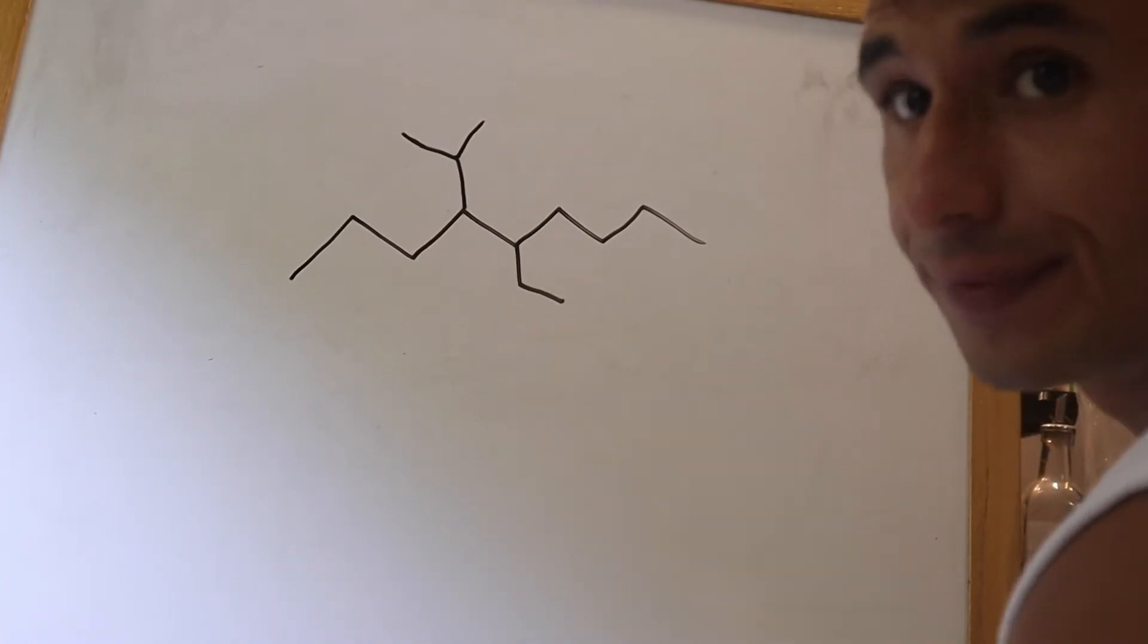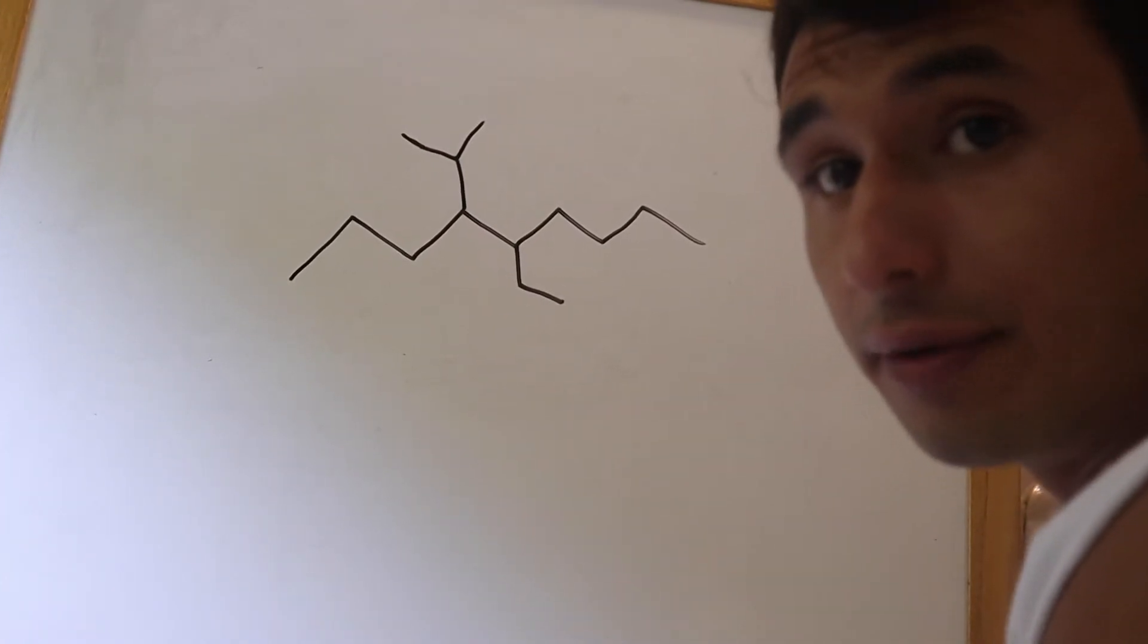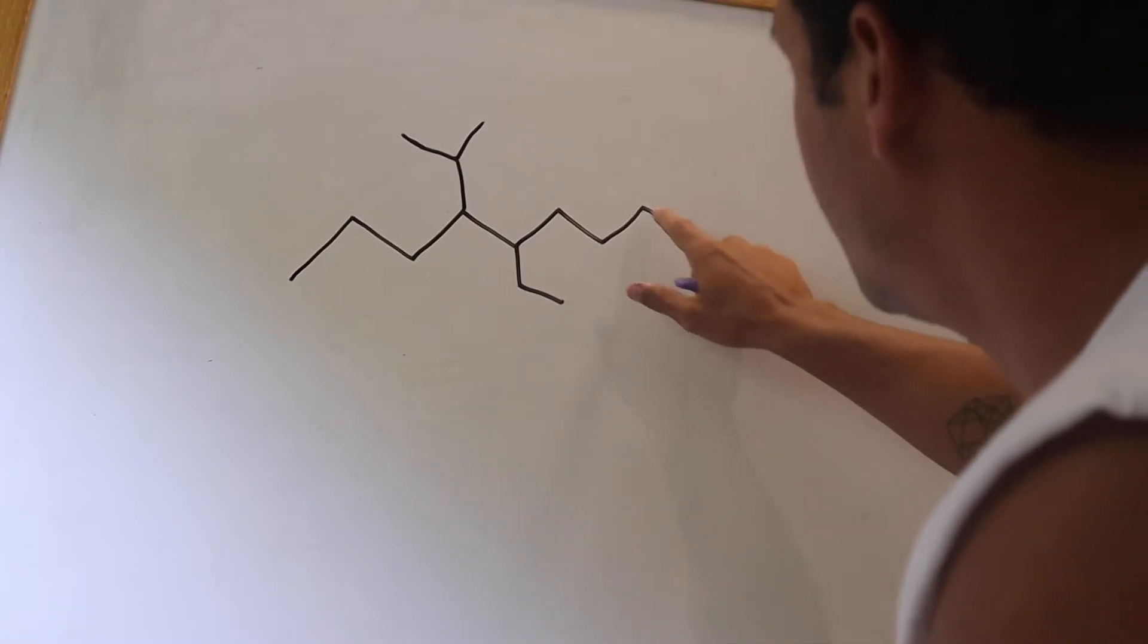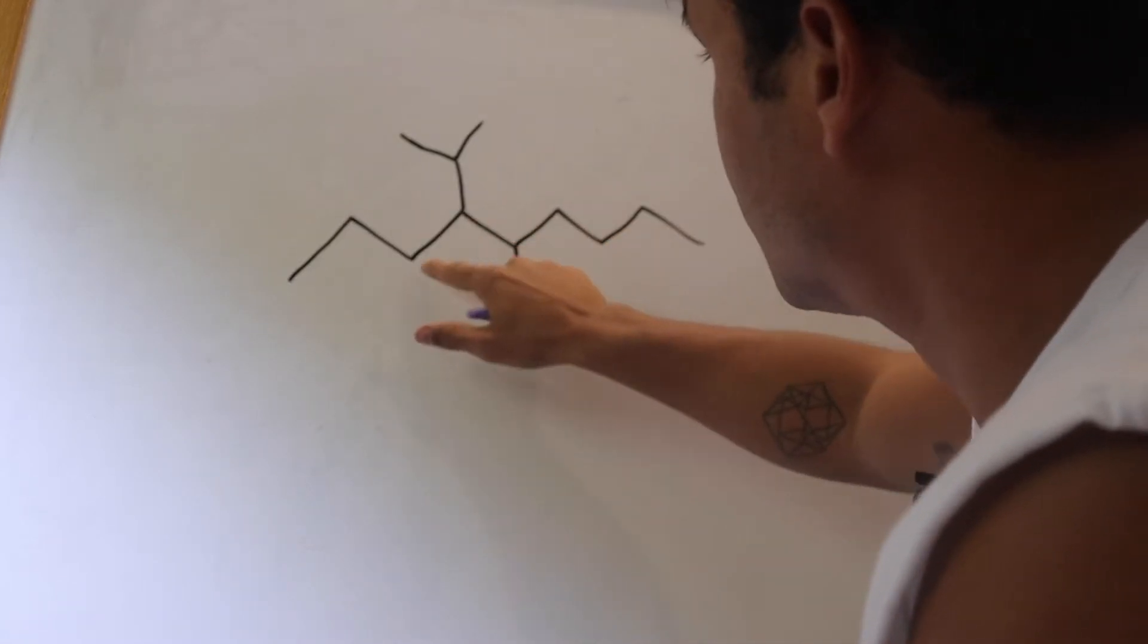Alright, so now we're going to solve this structure. First thing we do is count how many carbons again. So 1, 2, 3, 4, 5, 6, 7, 8, 9.